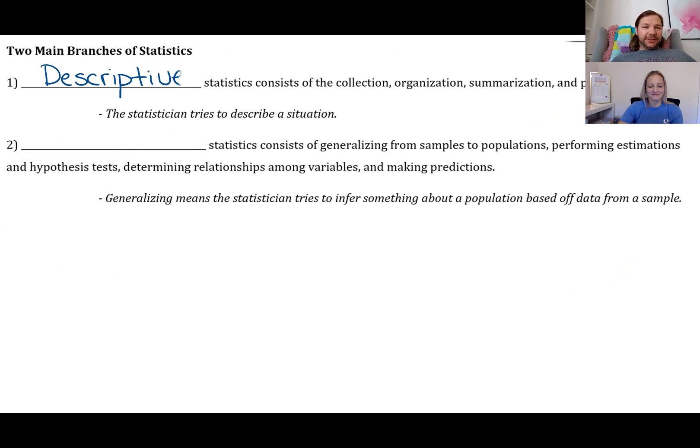There are two main branches of statistics. There is descriptive statistics, where the stats consist of the collection, organization, summarization, and presentation of data. So the statistician is trying to describe a situation and states facts directly from the data. Inferential statistics consists of generalizing from samples to populations, performing estimations and hypothesis tests, determining relationships among variables and making predictions. Inferential might be you look at someone's attendance data and then try to decide what grade you think they might get. Descriptive is describing and inferential is inferring.